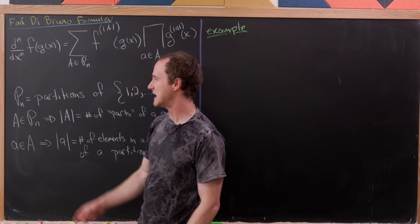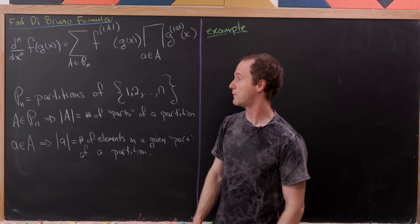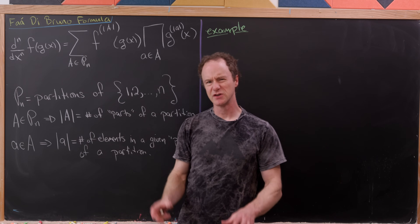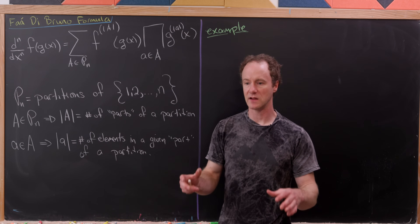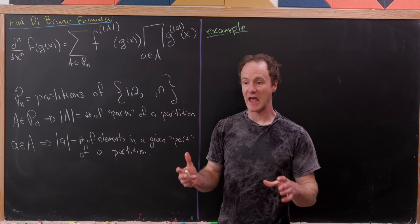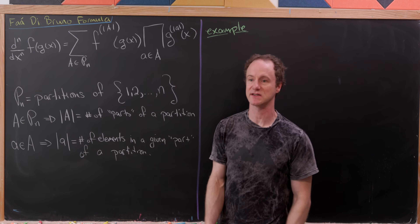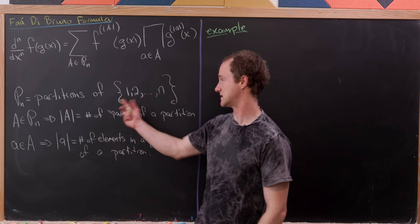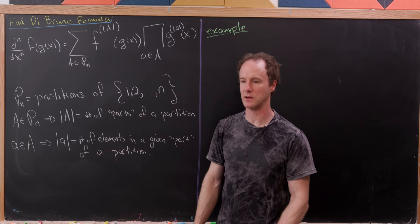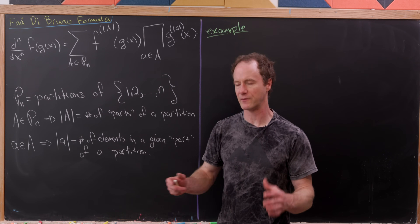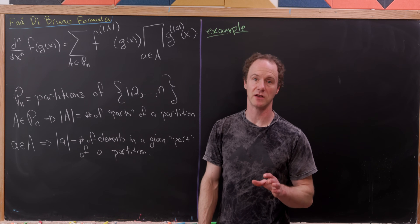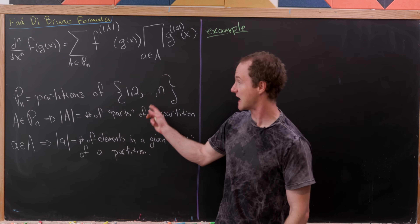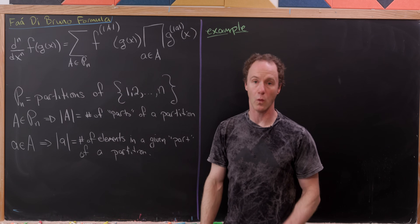So P sub n denotes the partitions of the set {1, 2, 3, ..., n}. A partition of a set is a way of decomposing it into disjoint subsets. The number of partitions is related to something called a Bell number — I believe I did a video on Bell numbers earlier on the channel. So P(n) is the set of all partitions of the set 1 to n, and that number gets big really quickly.